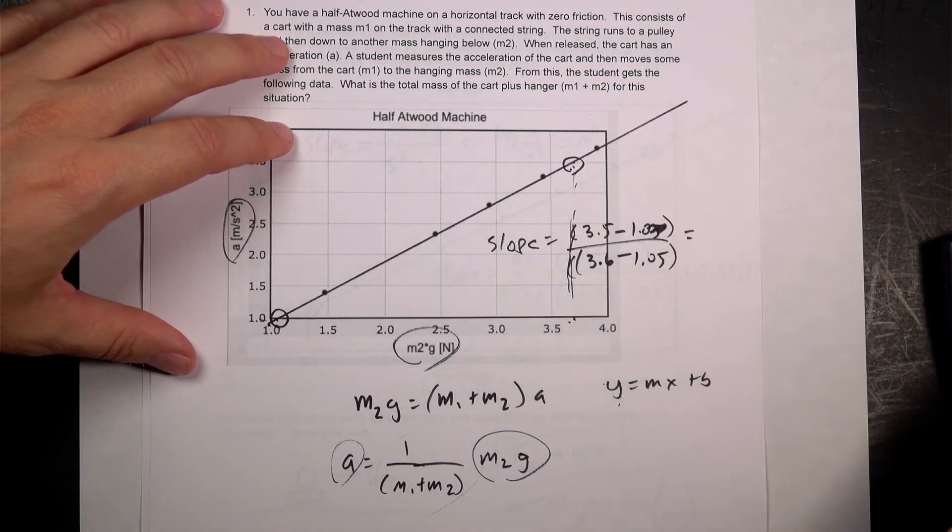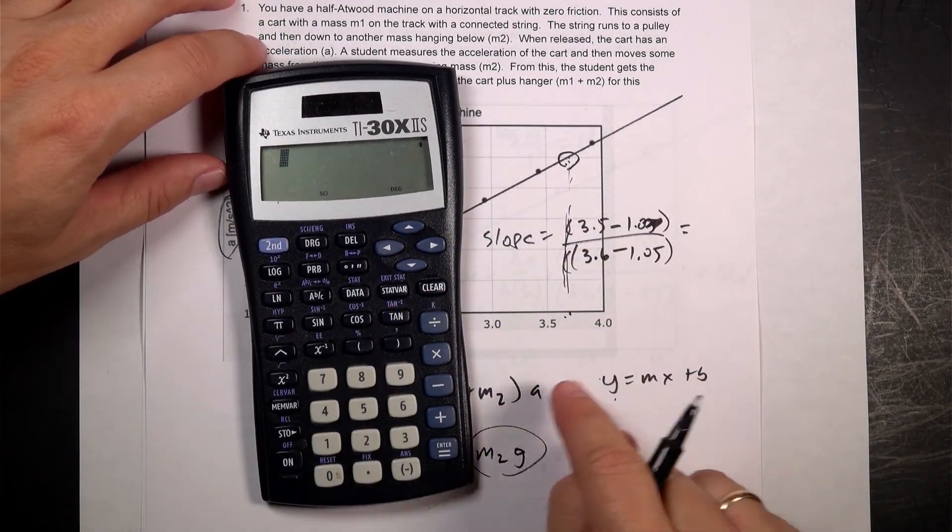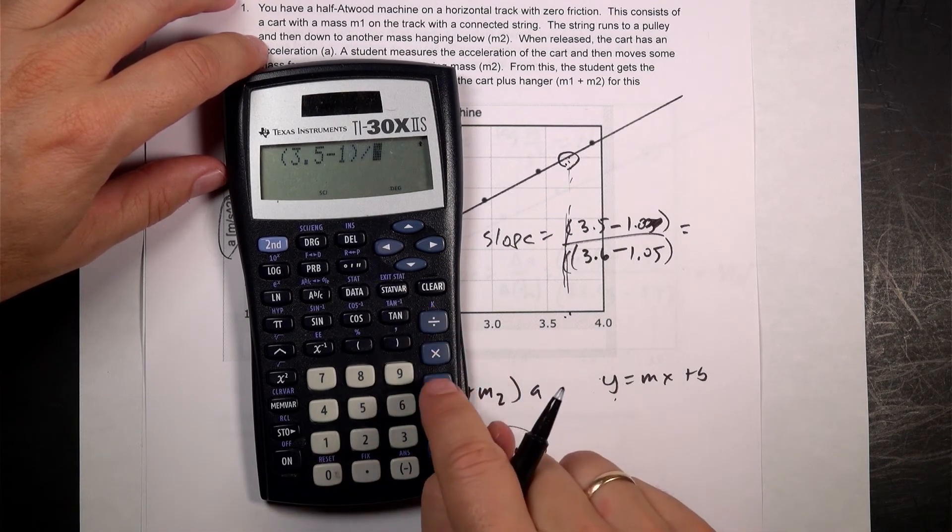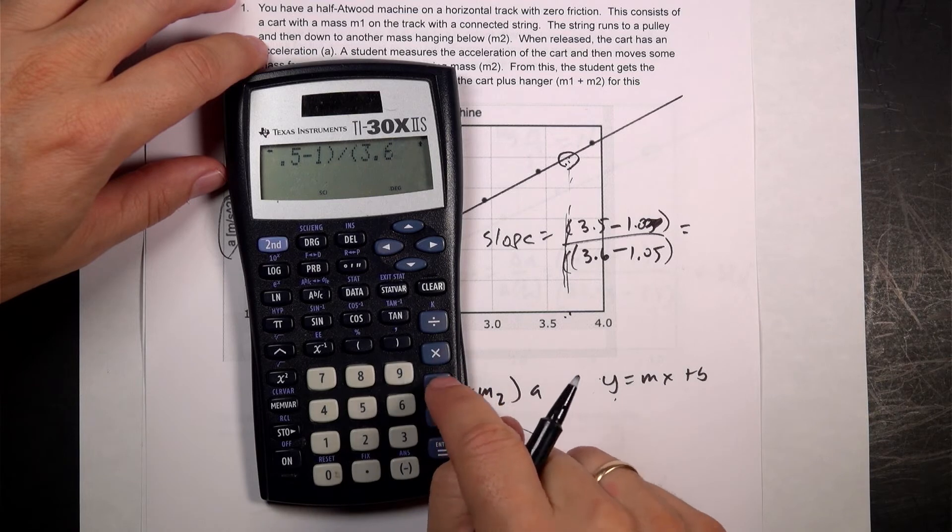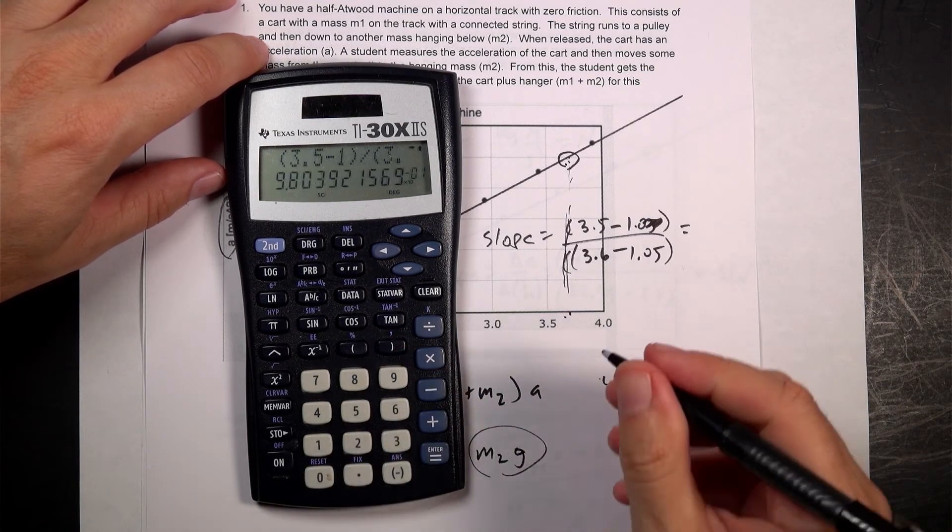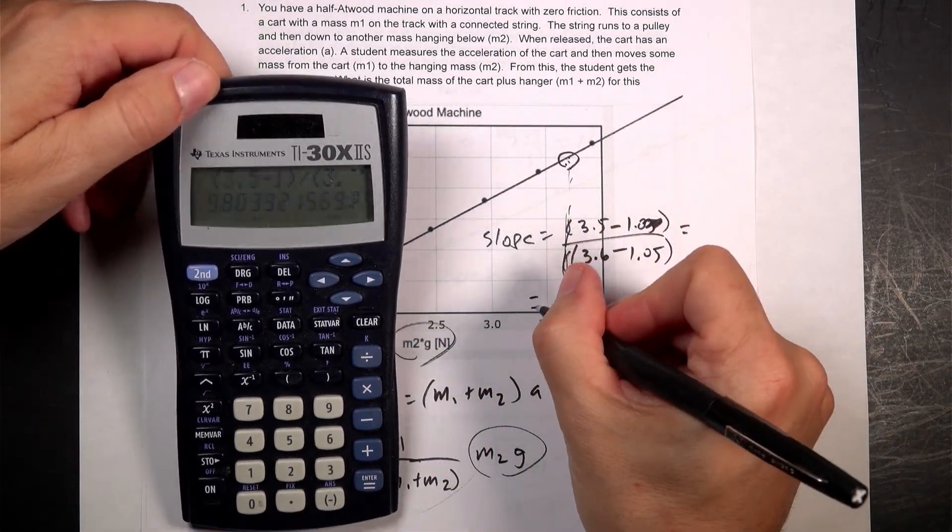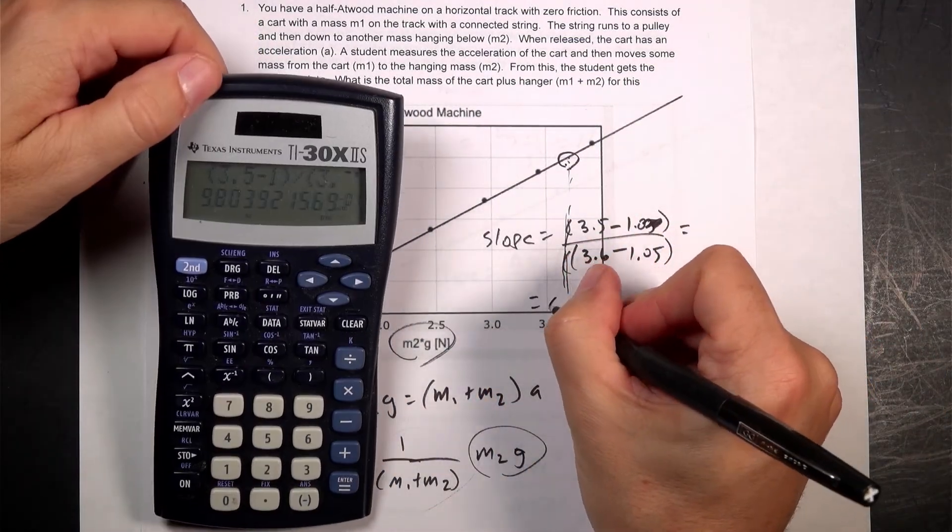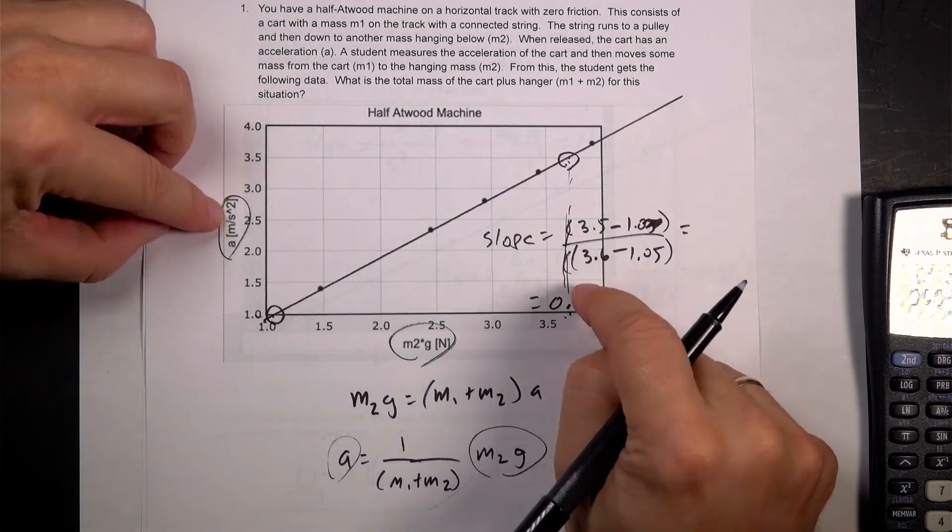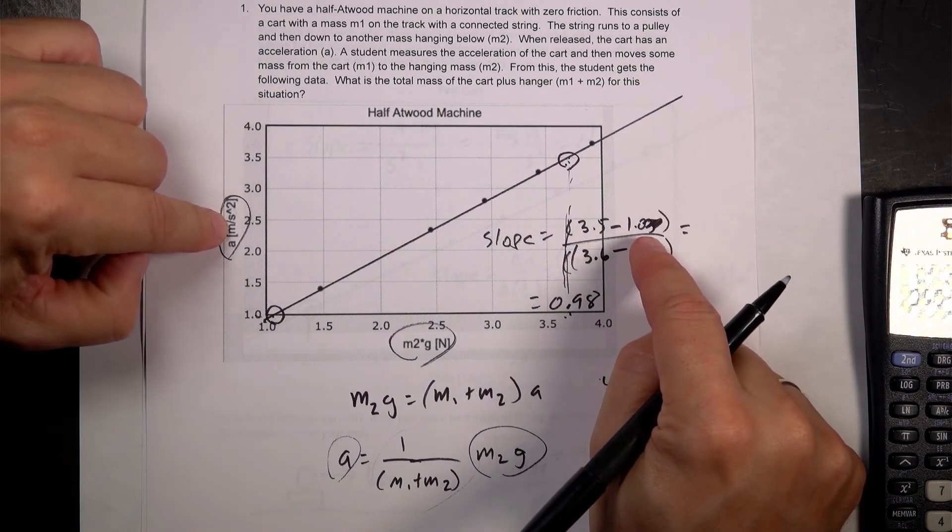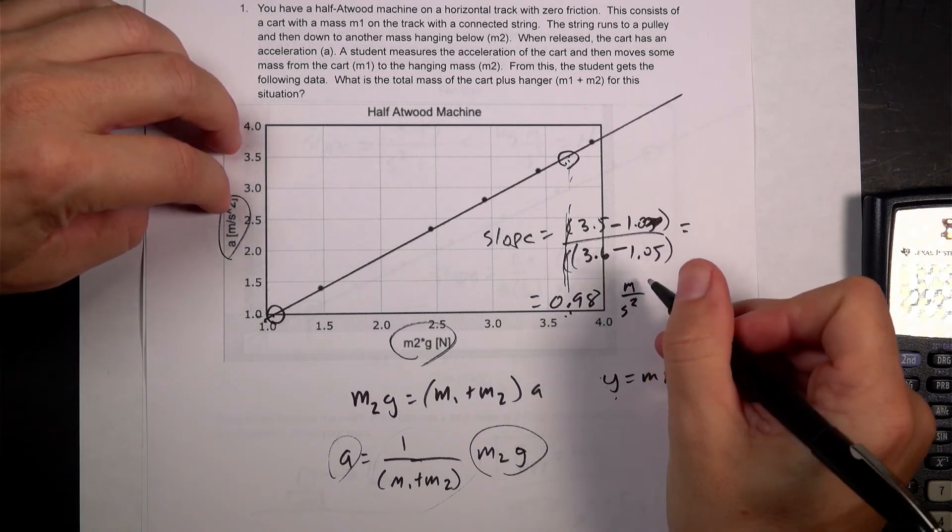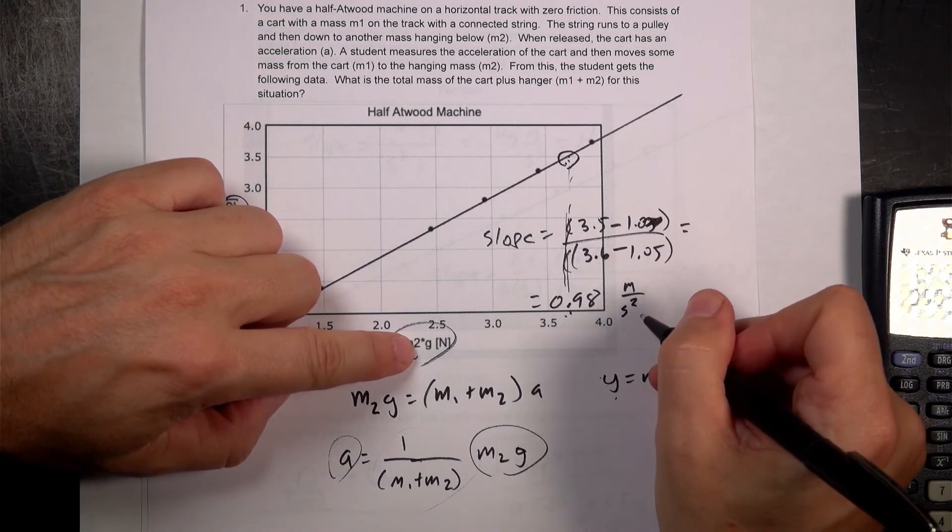Again, doing that on my calculator, I get the slope. Parentheses, 3.5 minus 1, divided by parentheses, 3.6 minus 1.05. And that is 0.98. And that has units of, let's just check the units, it's going to be equal to the acceleration in meters per second squared divided by newtons, which is a kilogram meter per second squared, so it's going to be kilograms divided by a kilogram meter per second squared. So the meters cancel and the second squared cancel, and I get 1 over kilograms for the units.